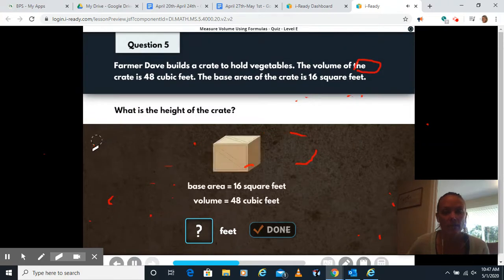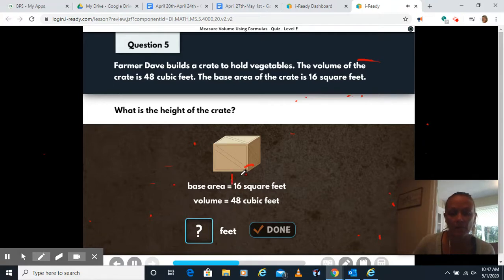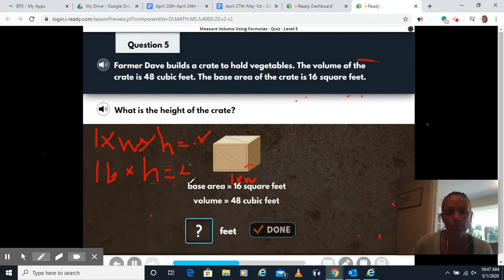Farmer Dave builds a crate to hold vegetables. The volume of the crate is 48 cubic feet. It already gave us the base area is 16 square feet. So what's the height? Remember when it gives us that base area, that's the length and the width. So they already told us the length and the width by giving us that 16. Now we're trying to figure out the height. So if we use length times width times height equals volume, our length times width is 16. We don't know the height, but I know that the volume is 48. So 16 times what is 48? Well, we could do a little bit of guessing and checking. I could try 16 times 2.